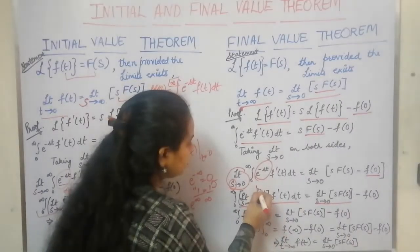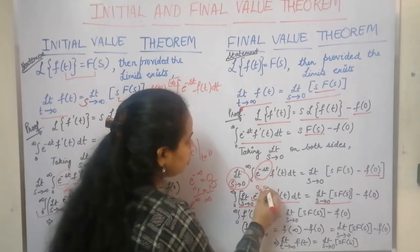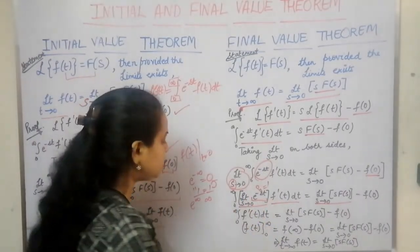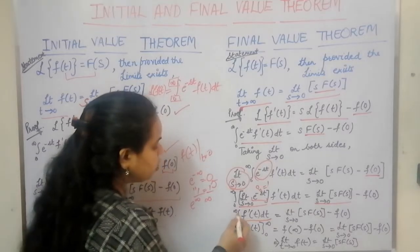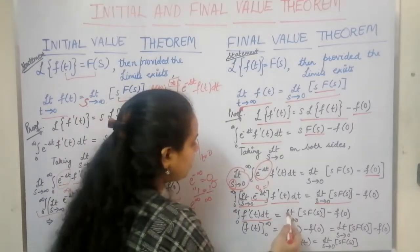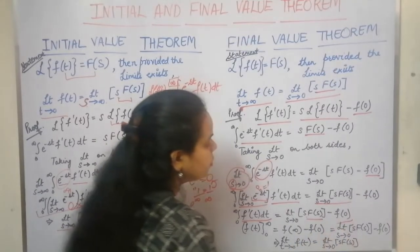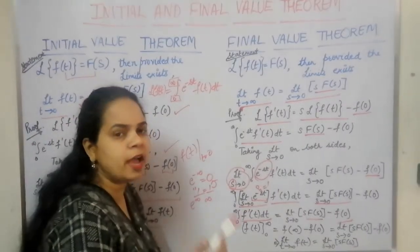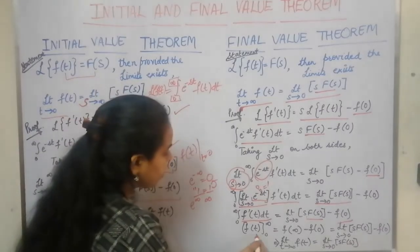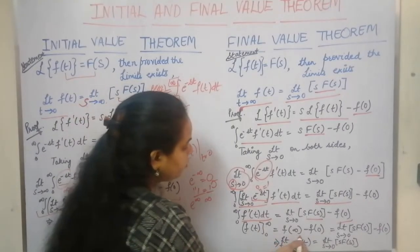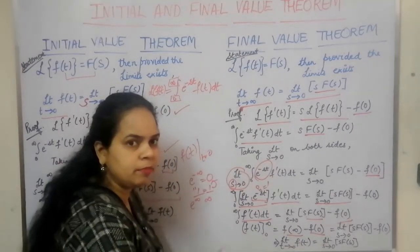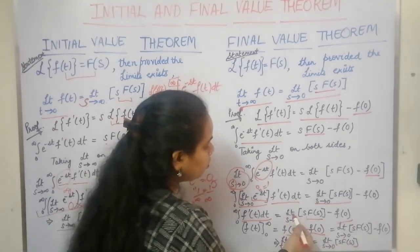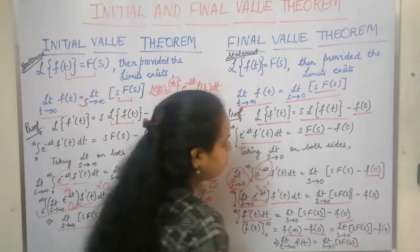We now substitute the limit s→0 on the exponential term. When s = 0, anything raised to the power 0 is 1. So e^(0) = 1, and 1 times f'(t) is just f'(t). We are left with the integral from 0 to infinity of f'(t) dt, which equals limit s→0 of [s·F(s)] − f(0). We solve this integral: the integral and differentiation cancel, and applying the limits gives f(t) evaluated from 0 to ∞, which is f(∞) − f(0) = limit s→0 of s·F(s) − f(0).